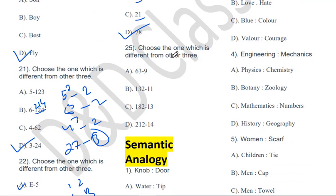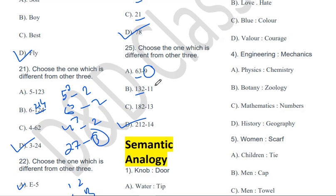Choose the one which is different from the other three: 63→9, 130→11, 180→13, 21→14. The odd one out is 21→14. Because 63 is divisible by 9, 132 is divisible by 11, and 182 is divisible by 13. But 212 is not divisible by 14. So 21→14 is the odd one out.